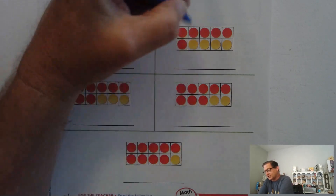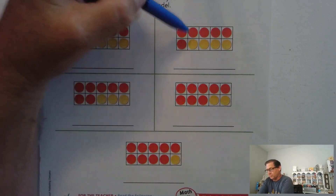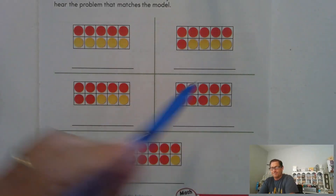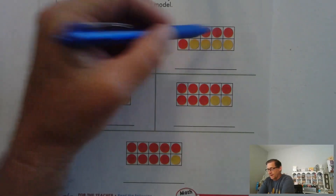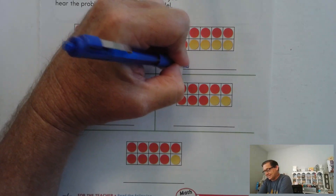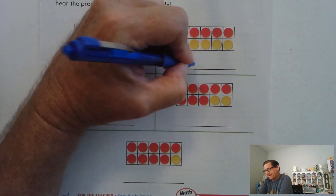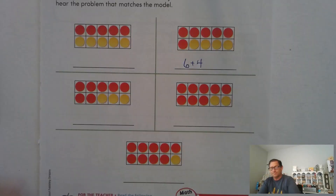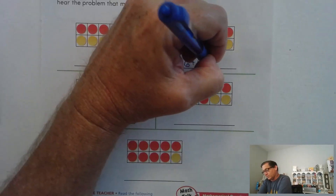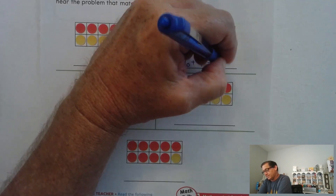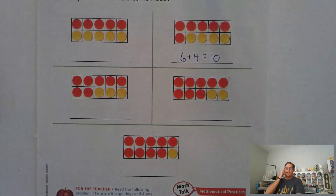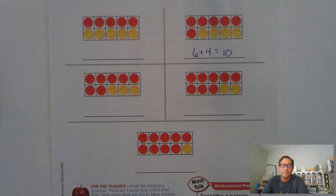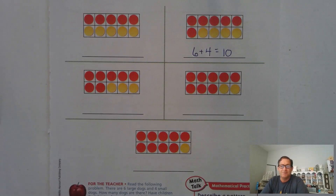So let's see — six large dogs. We know that there's five and five, right? So five and one, that would be six. And four small dogs equals 10. Now let me read a different problem.